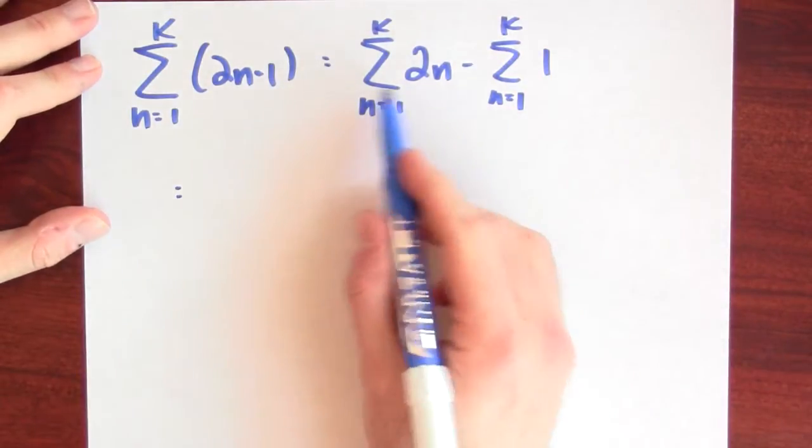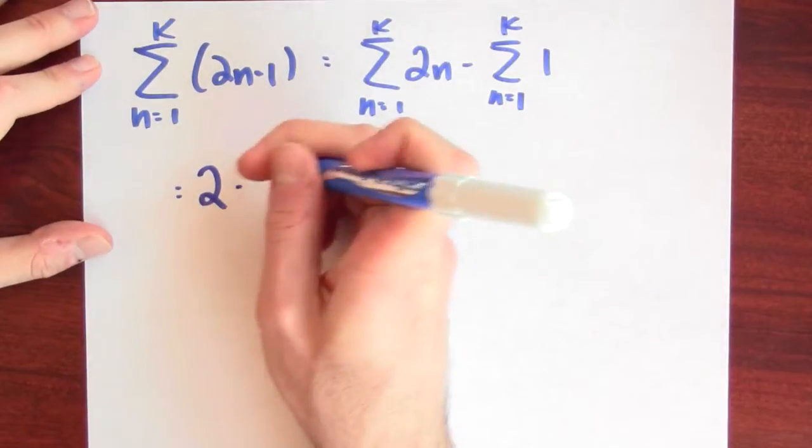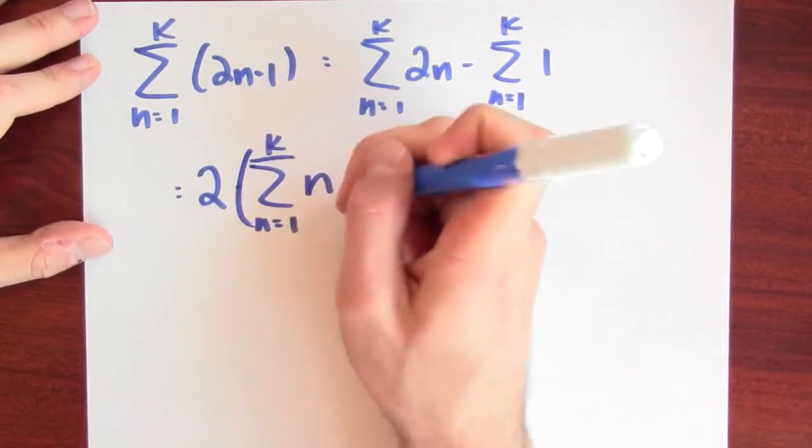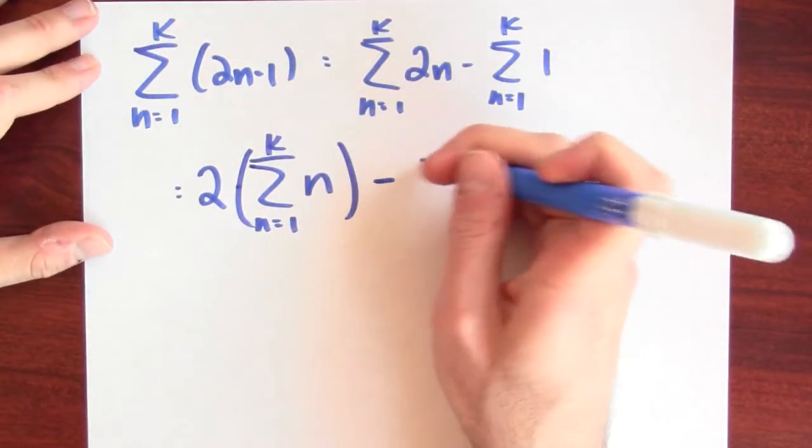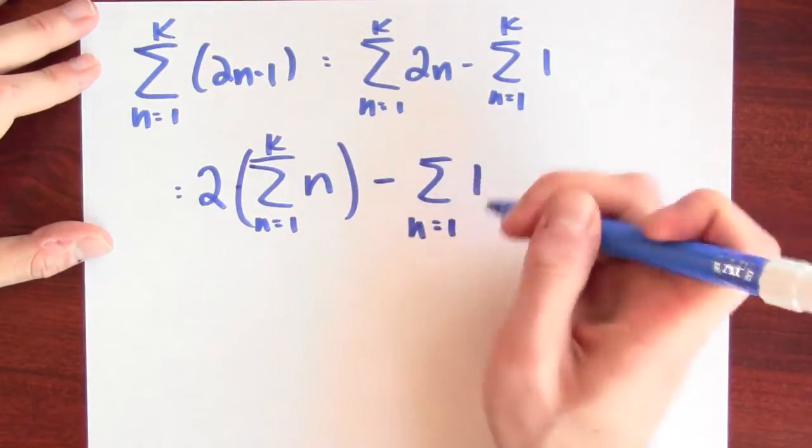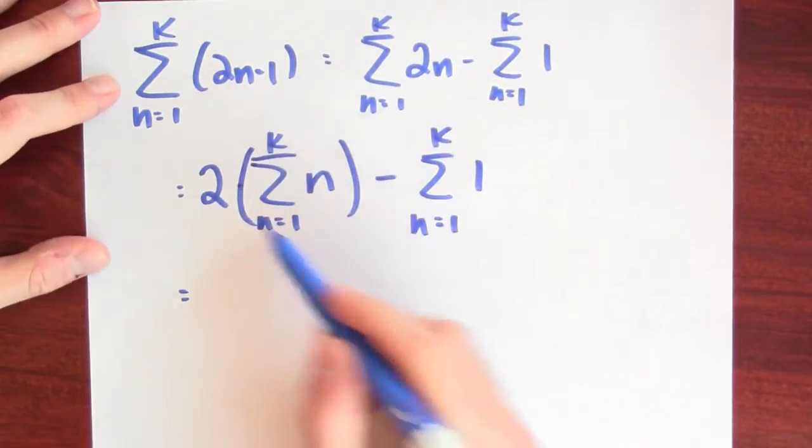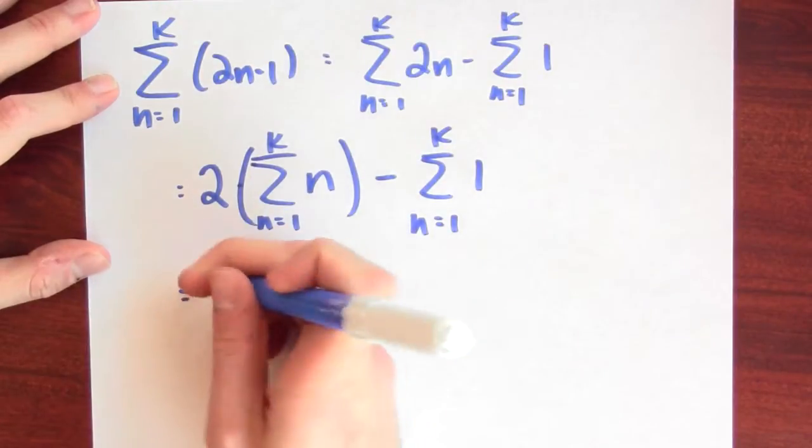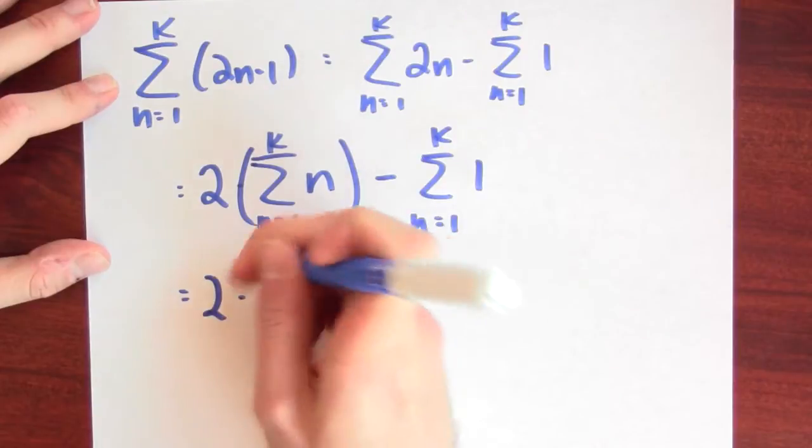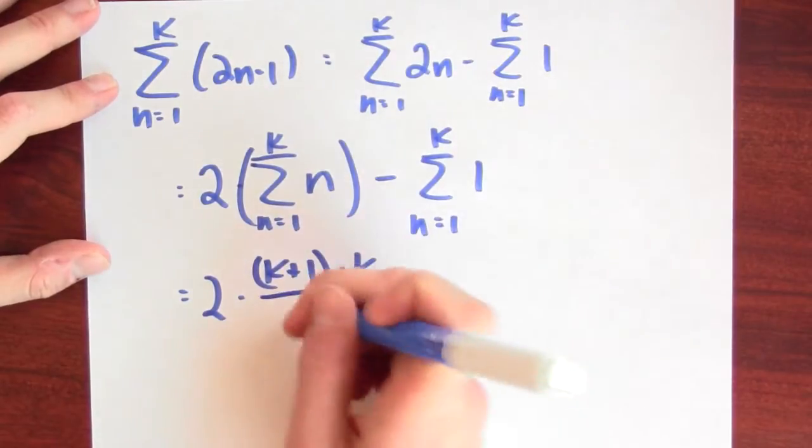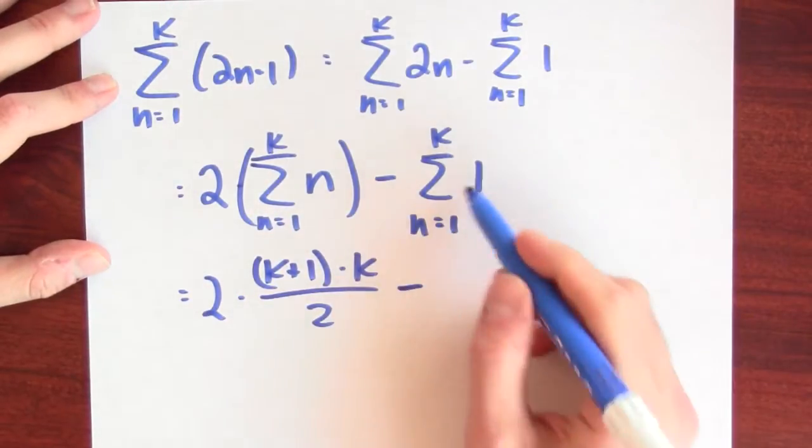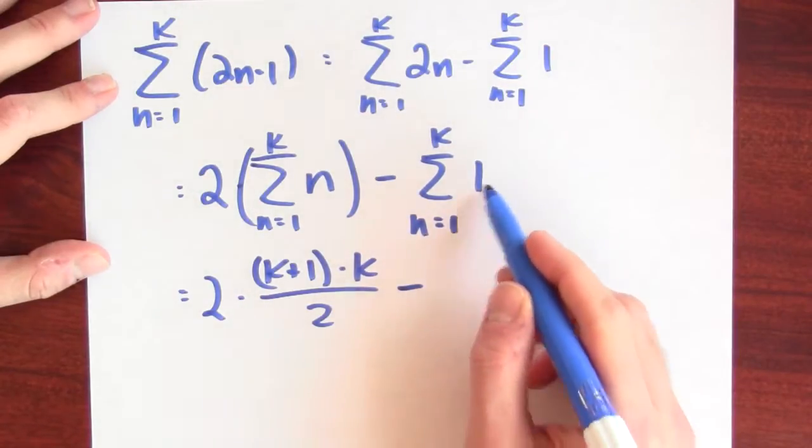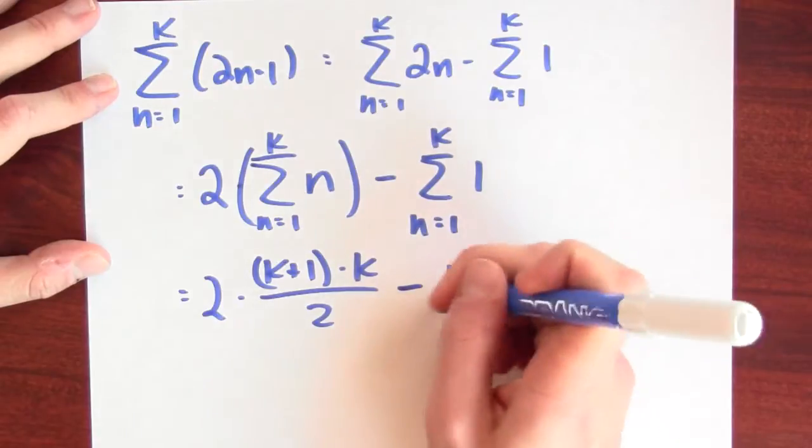Now I can pull out this factor of 2 by distributivity. So this is 2 times the sum of n as n goes from 1 to k, minus just the sum of 1, n goes from 1 to k. I'm going to have a formula for the sum of just the first k whole numbers. And if you remember back to that formula, that's k plus 1 times k over 2. And what's just the sum of 1 as n goes from 1 to k? Well, this is 1 plus 1 plus 1 plus 1 k times, so that's just minus k.